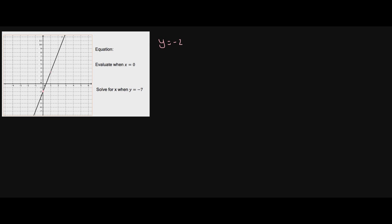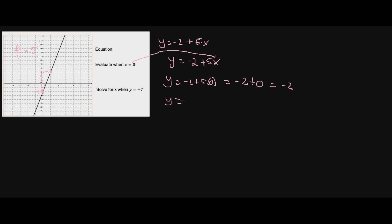Let's create the equation for this next graph. My y-intercept is negative two, so we're starting with negative two. The next point goes up five over one, so the slope is five divided by one which is just five. Our equation is y equals negative two plus five x. When we evaluate at x equals zero, that's the y-intercept — plugging in zero gives five times zero equals zero, so y equals negative two. Correct.